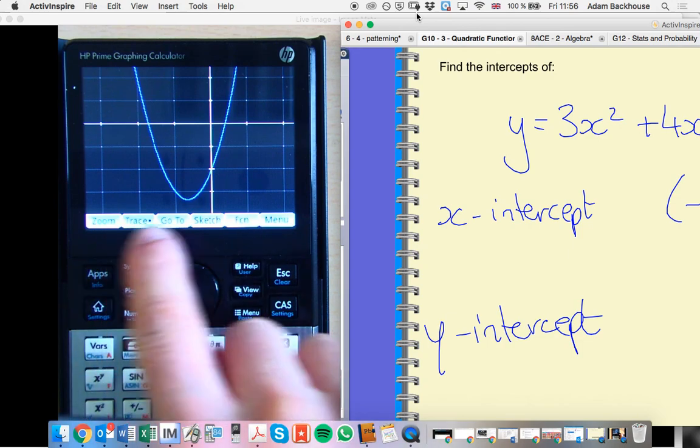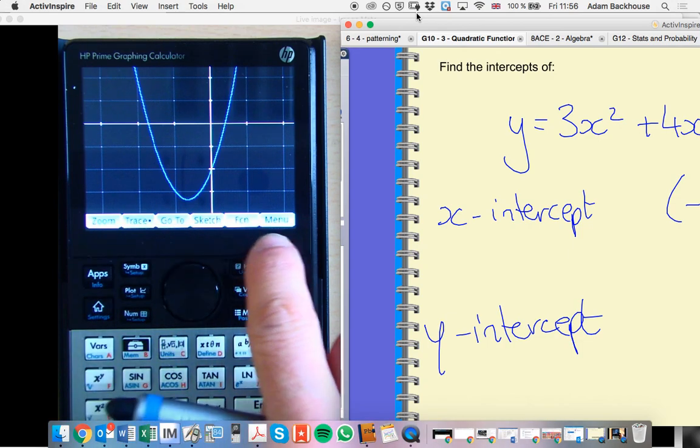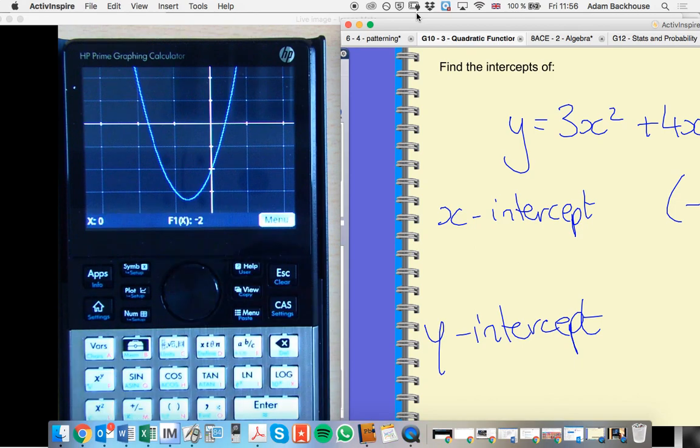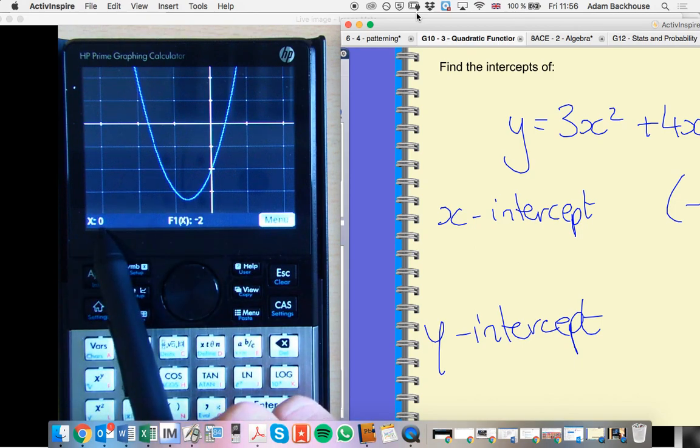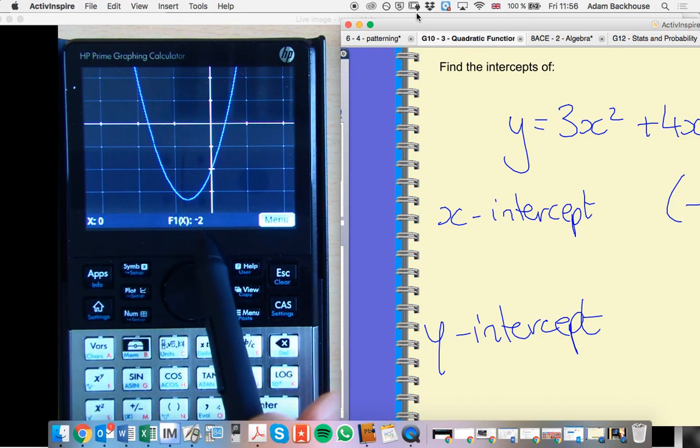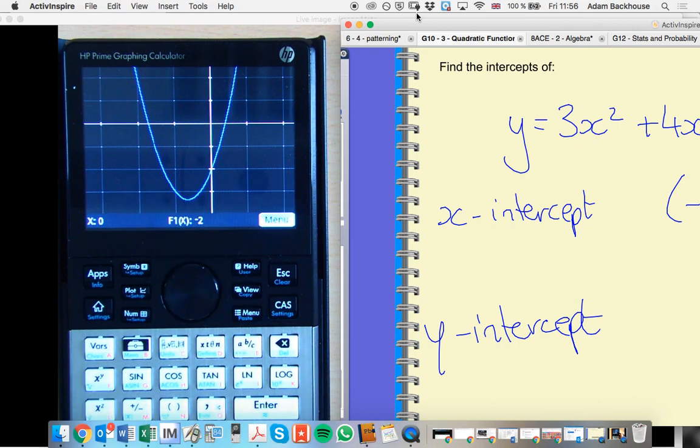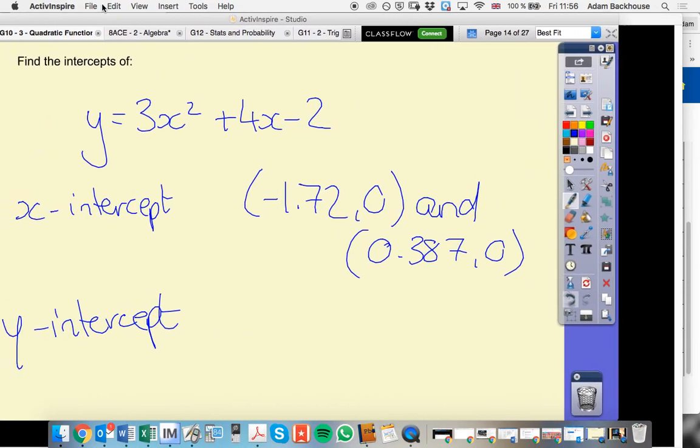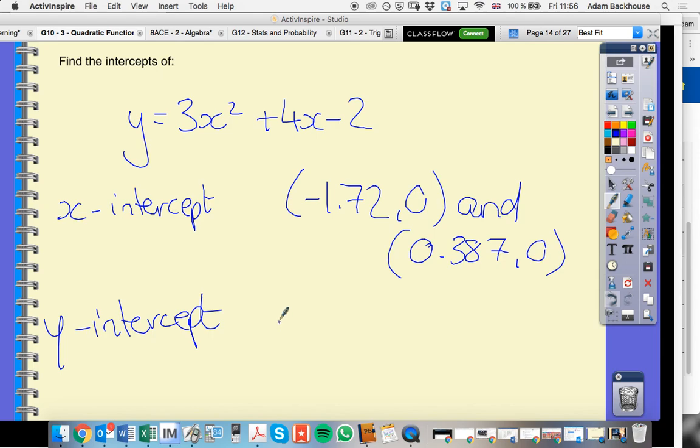At the moment, this menu is covering up our coordinates. So let's hit menu, and there we go. When x is 0, we're at negative 2 on our function. So that is giving us our y-intercept of 0, negative 2.